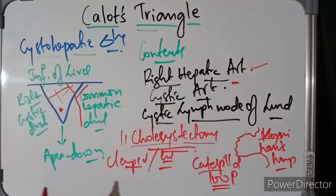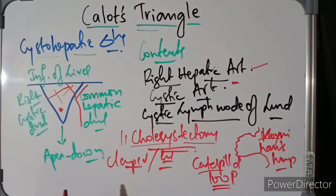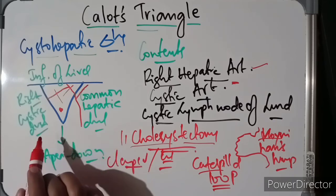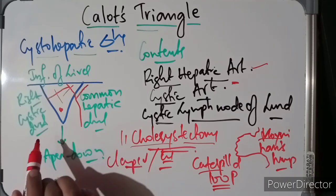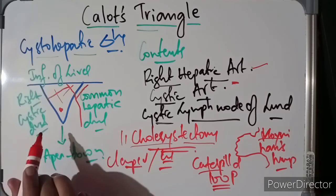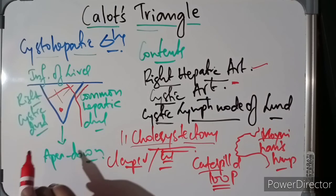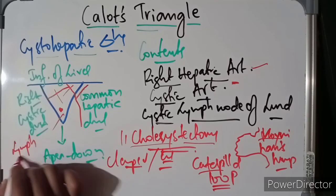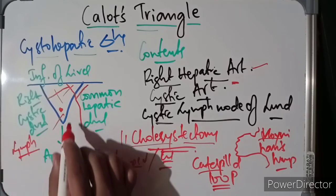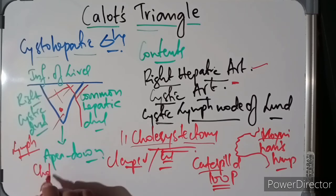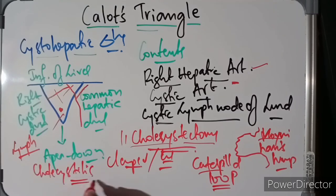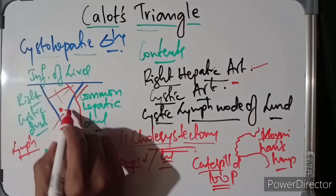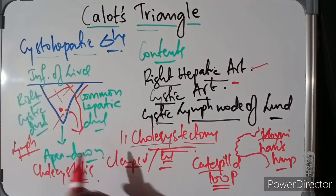This is about the cystohepatic triangle or Calot's triangle. The cystic node of Lund, present in the apical region of this triangle, receives most of the lymph from the gallbladder, and it is commonly enlarged during cholecystitis, that is, inflammation of the gallbladder.